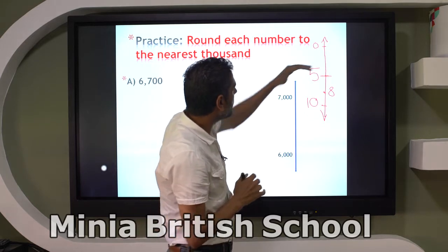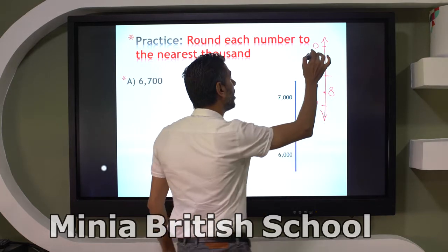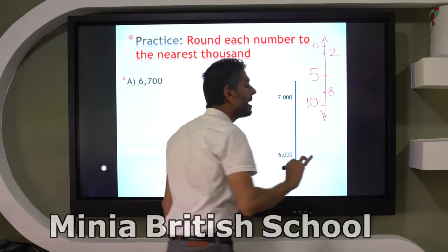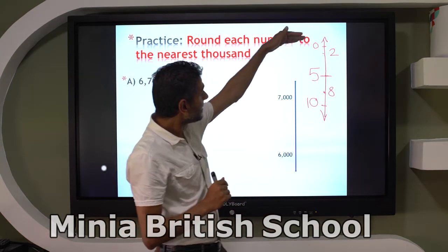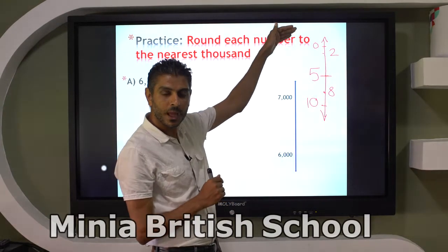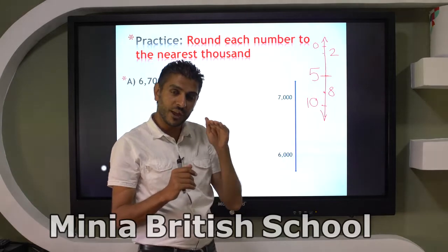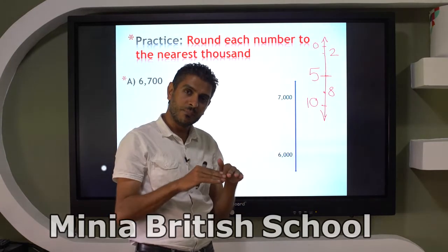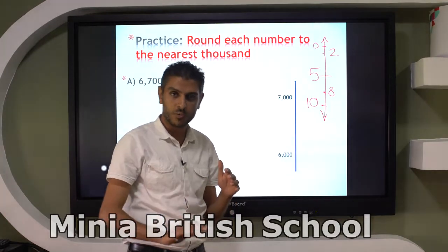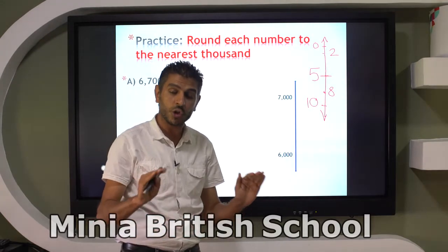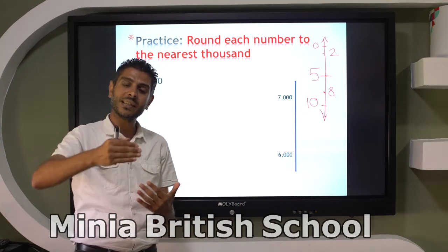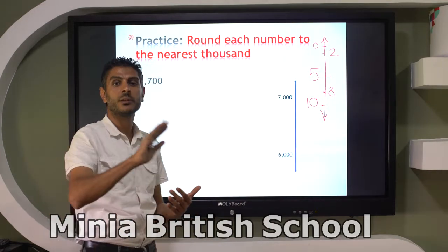But if the number is like 3, 2, 1, or 4 — here is 2 — is 2 close to 0 or 10? Close to 0. So if the number is less than the midpoint, don't add 1, that's round down. But if the number is more than the midpoint, add 1.